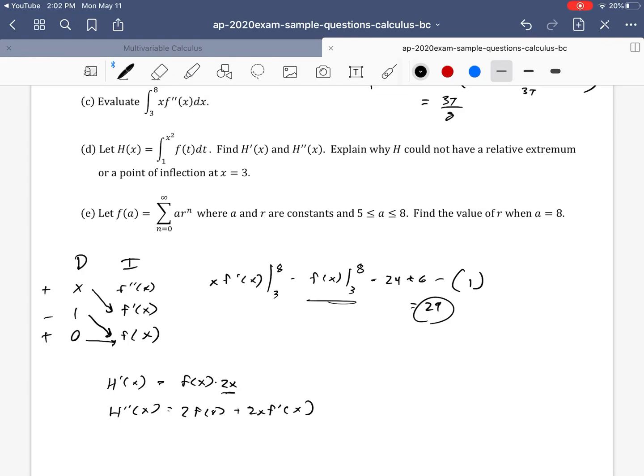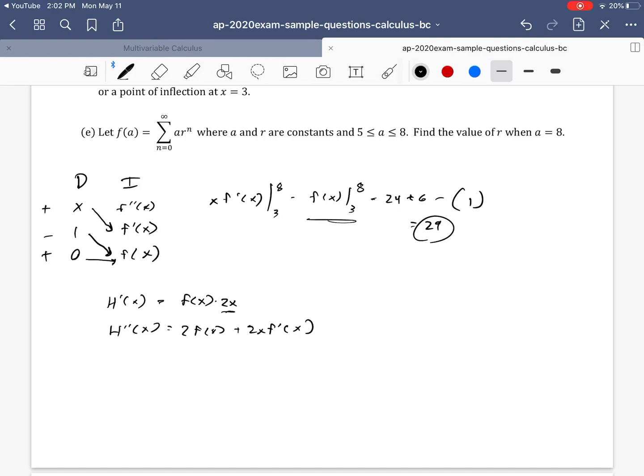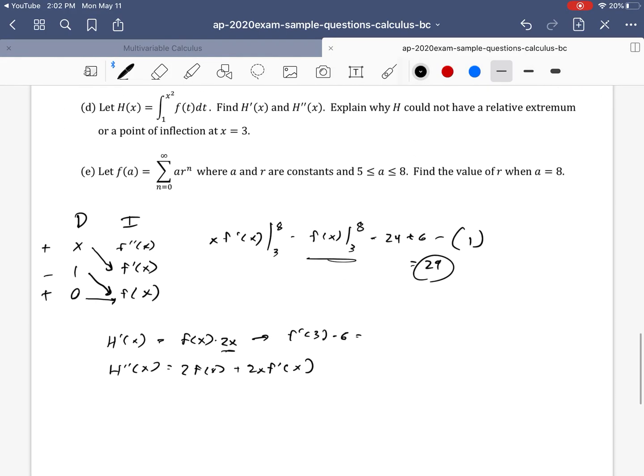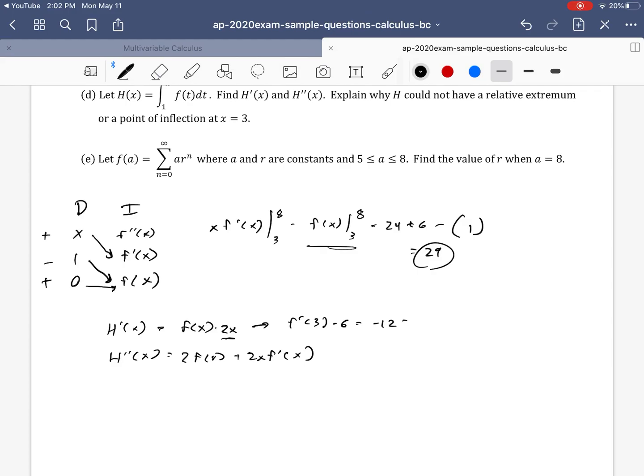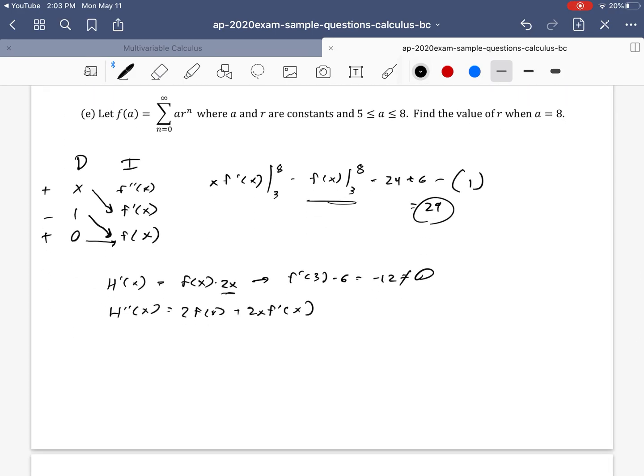Explain why h could not have a relative extremum or point of inflection at x equals 3. Okay, we'll notice a necessary condition for a relative extremum is that we have h prime of x equal to 0. So could h prime of 3 be 0? Well, h prime of 3 is f prime of 3 times 6. So f prime of 3 times 6, which is f prime of 3 is negative 2 times 6 or negative 12, and that's not equal to 0. So x equals 3 is not a critical point, and so that means that you cannot have a relative extremum at x equals 3.